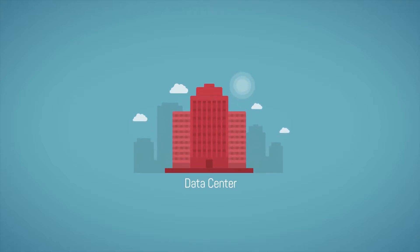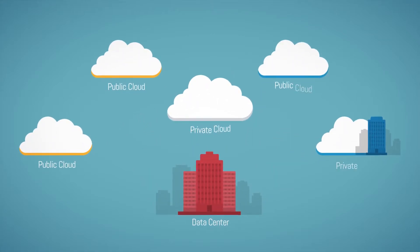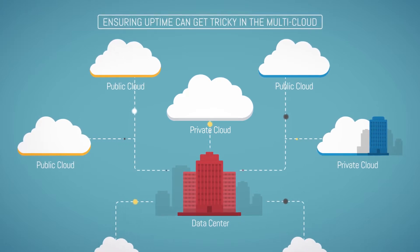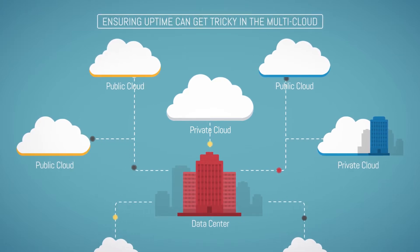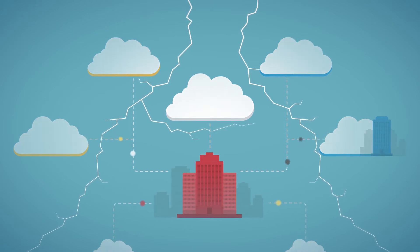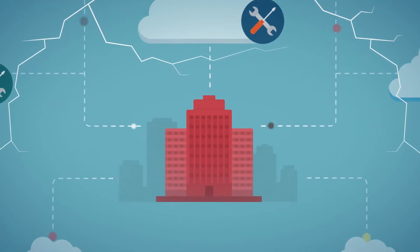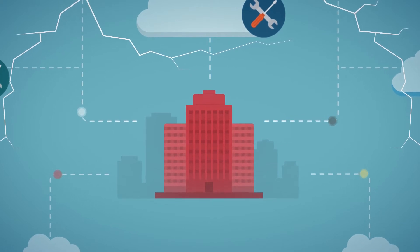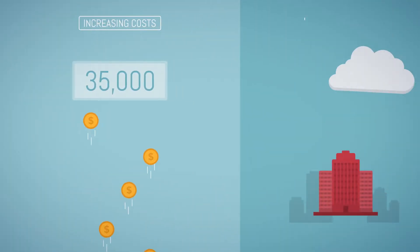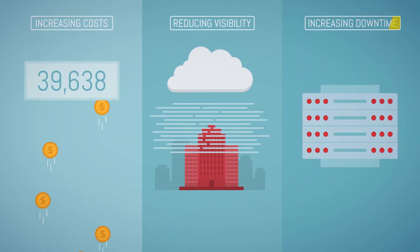As your business adopts cloud, ensuring uptime can get tricky. Your applications get spread across on-premises, private and public cloud locations, which leads to environment fragmentation. Using point tools for different parts of your IT environment is inefficient. These can result in increased operational costs, reduced visibility, and an increased risk of IT downtime.